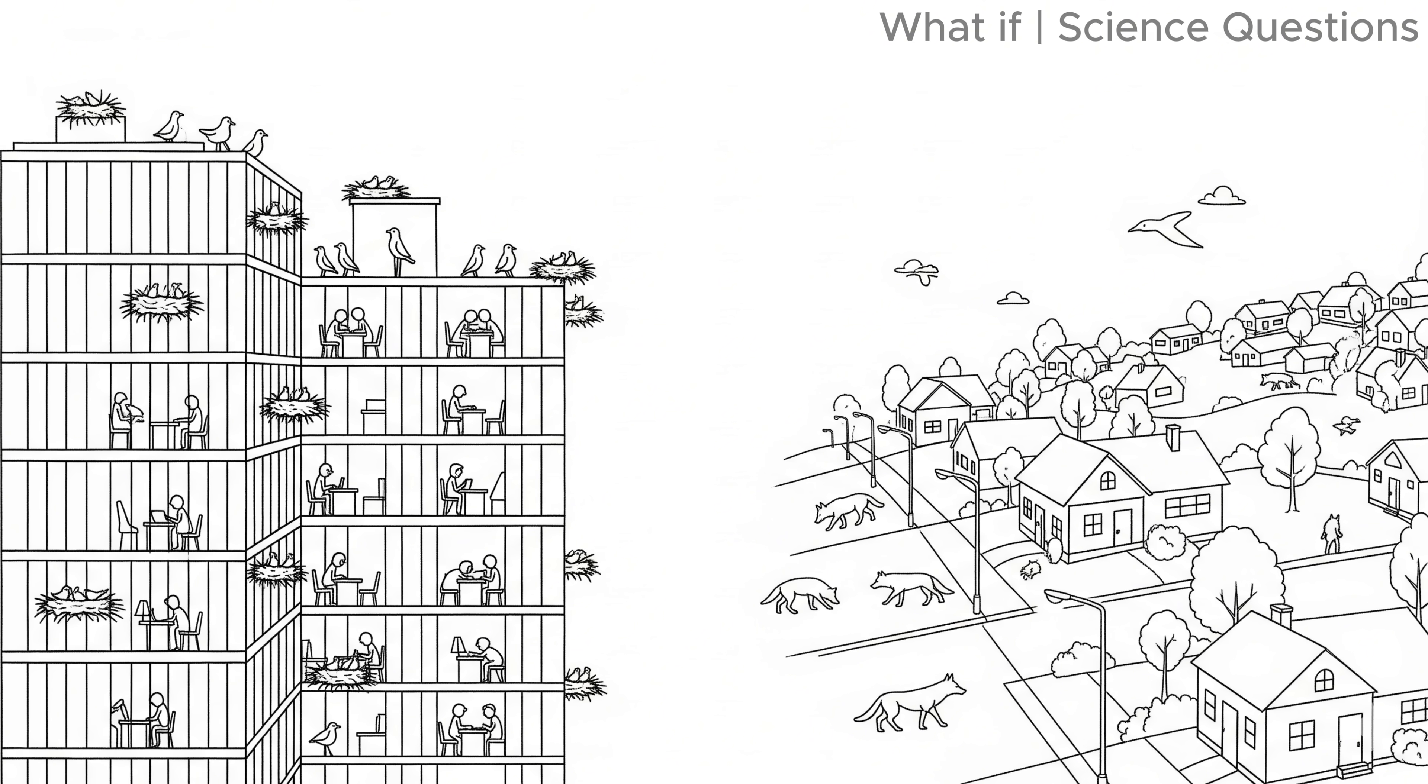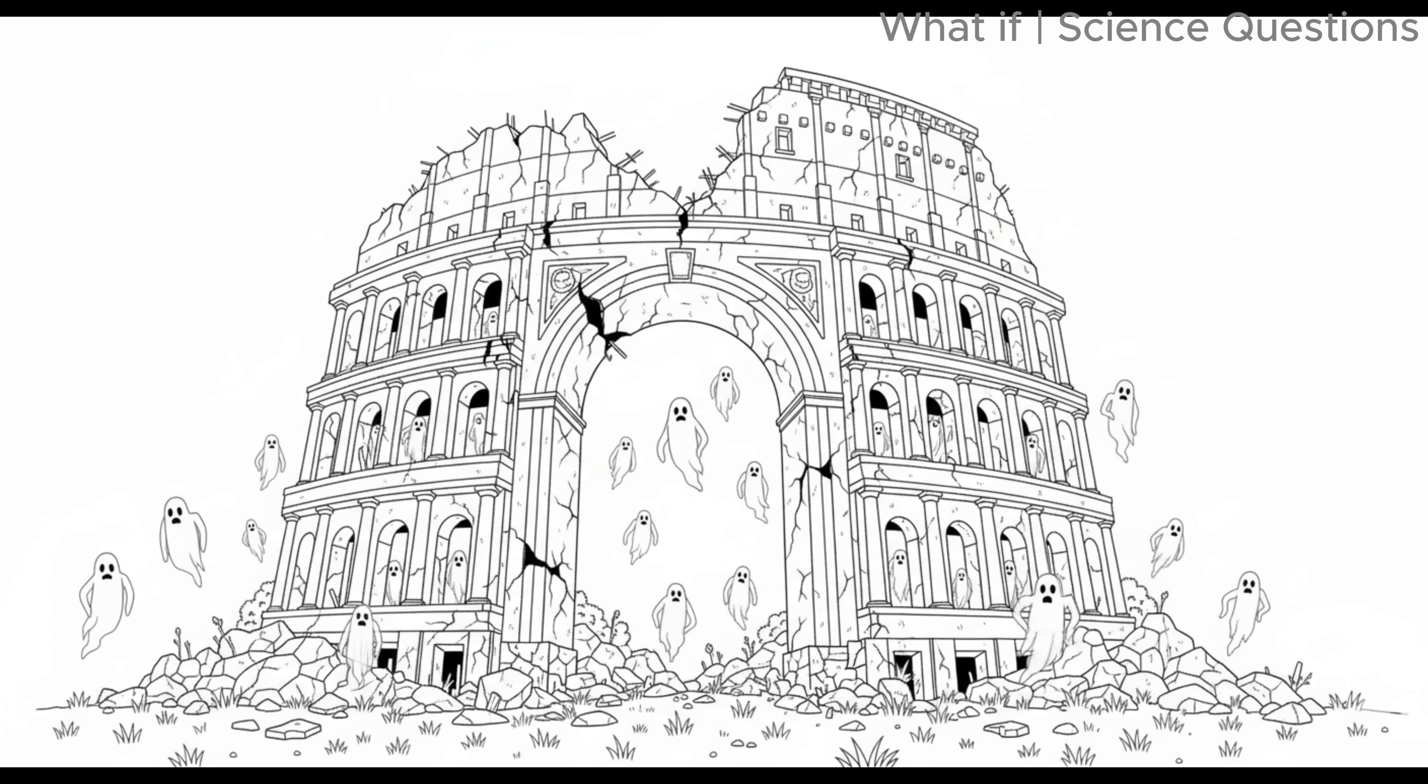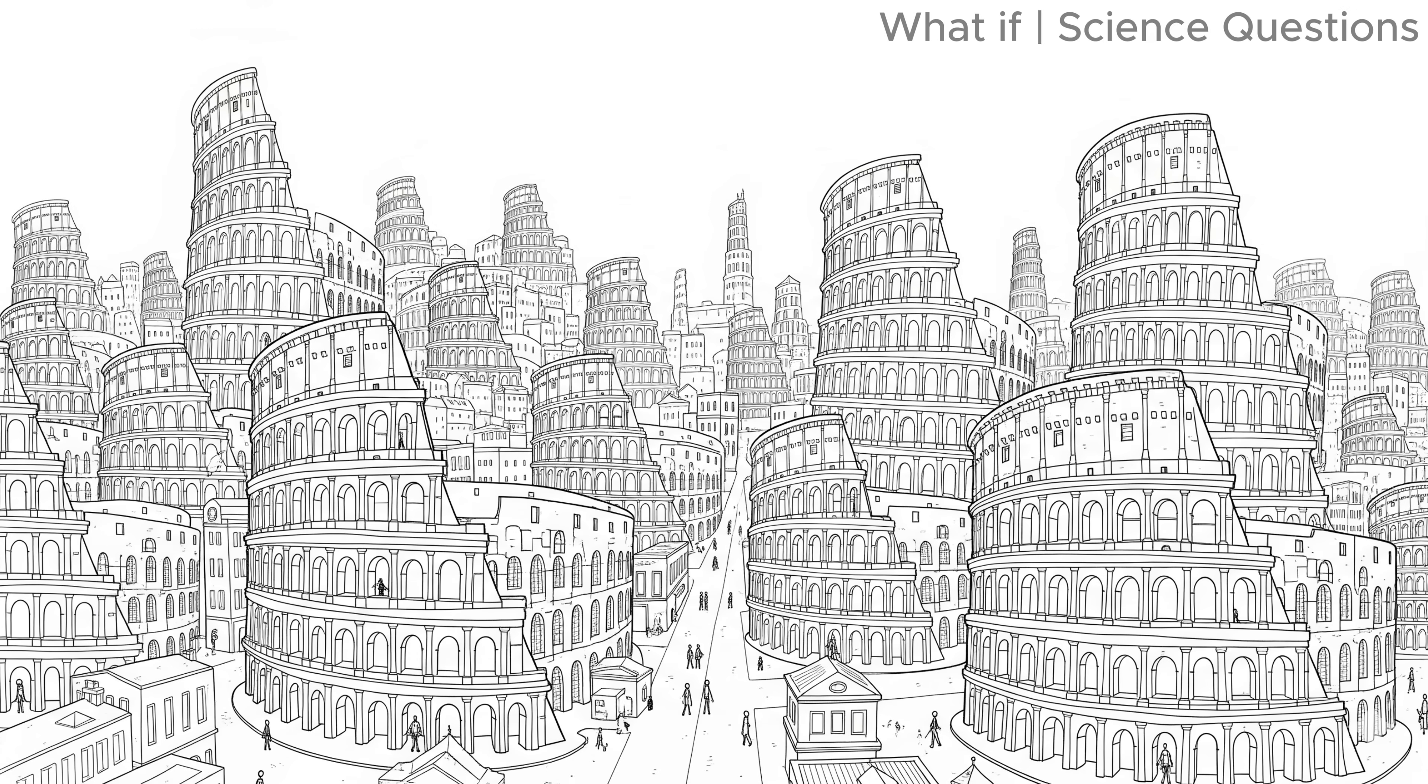Birds would nest inside office towers. And wolves would hunt through suburbs. Our once indestructible monuments of civilization would look more like haunted ruins. Think of the Colosseum in Rome, but multiplied across every city on earth.